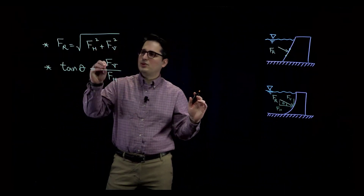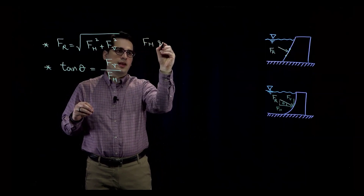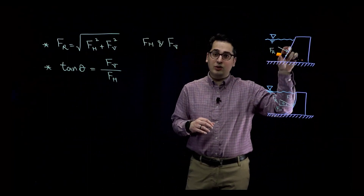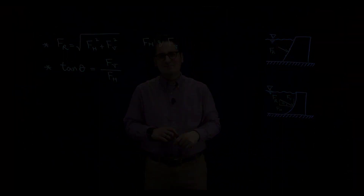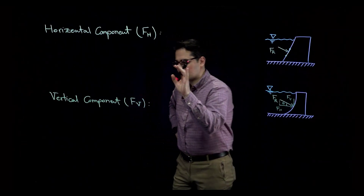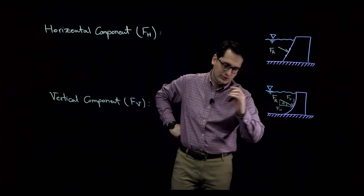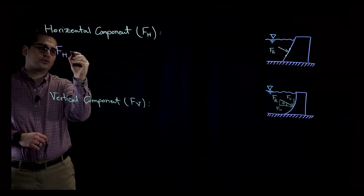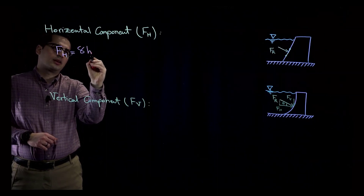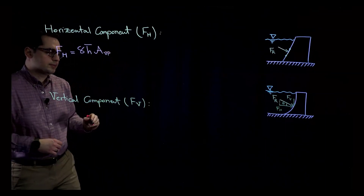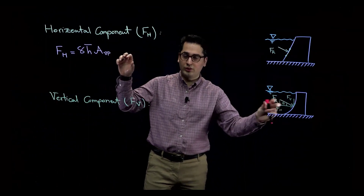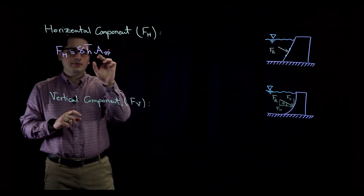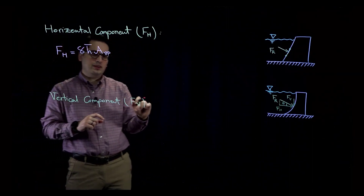To calculate the horizontal component of the resultant force on a curved surface, the equation is: F sub H equals gamma times H-bar times A sub VP. Gamma is the specific weight of the fluid, H-bar is the distance to the center of gravity, and A sub VP is the vertically projected area.